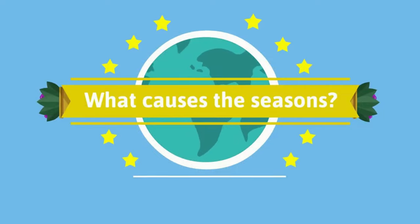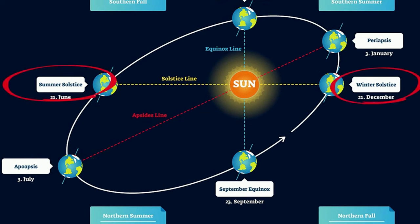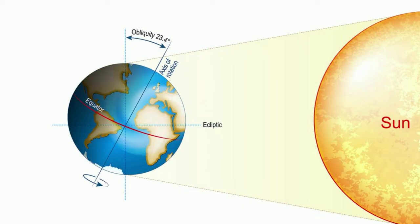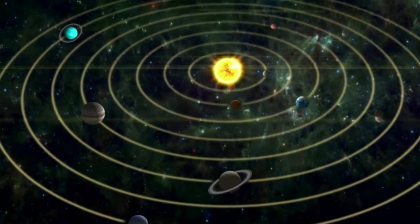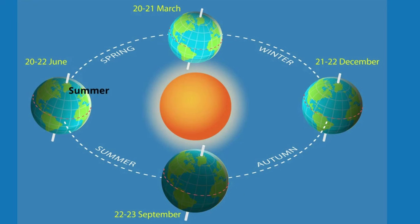What causes the seasons? It would make sense that winter occurs when the Earth is furthest from the Sun and summer when it is closest, but in reality it is almost the opposite. The main reason for seasons is that the Earth is tilted on its axis at 23.44 degrees. As the Earth revolves around the Sun, this tilt causes sunlight to strike certain regions at different angles. The hemisphere tilted towards the Sun is warmer because sunlight is less scattered and there is more energy per square kilometer. Winter occurs when the hemisphere is pointed away from the Sun, resulting in less energy per square kilometer.